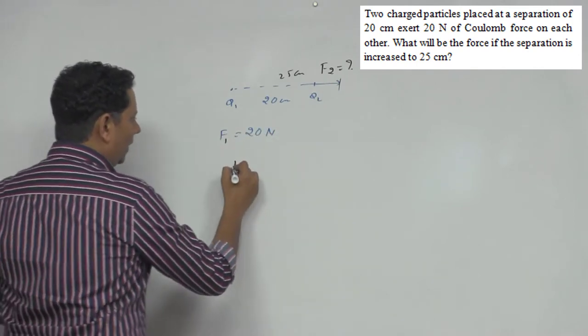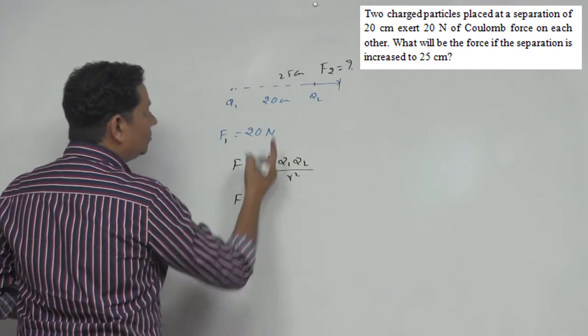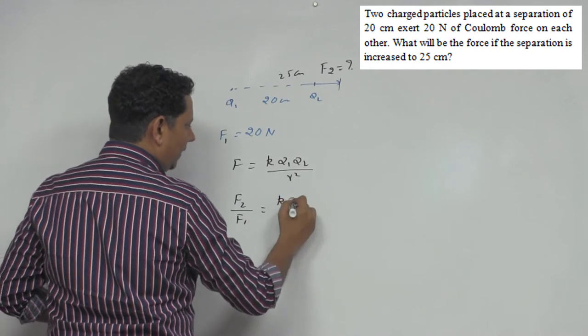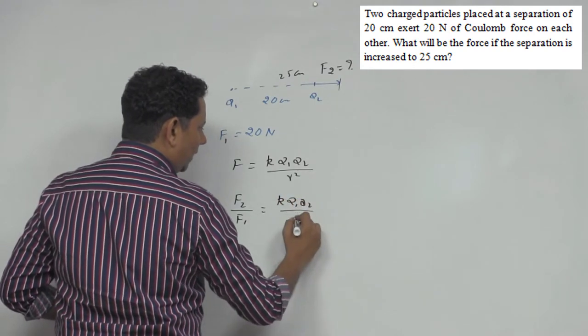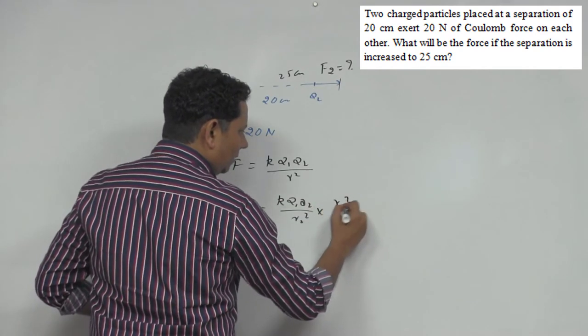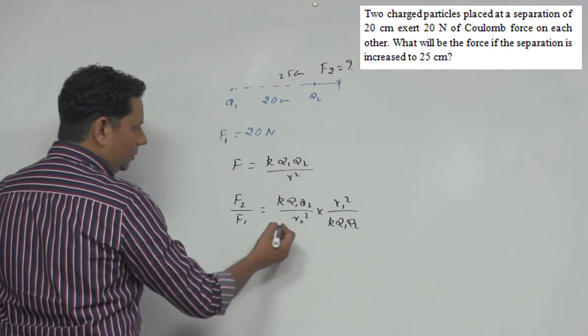Now you know the electrostatic force is written as K Q1 Q2 divided by R squared. So if we take the ratio F2 divided by F1, we write it as K Q1 Q2 divided by R2 squared multiplied by R1 squared over K Q1 Q2. Now K Q1 Q2 cancels.